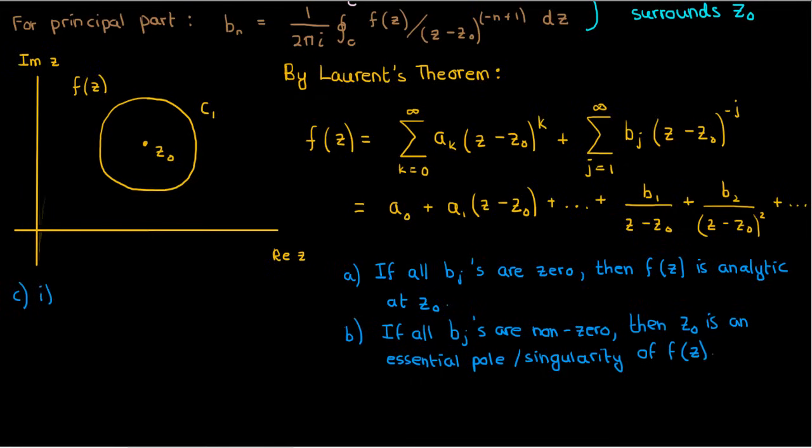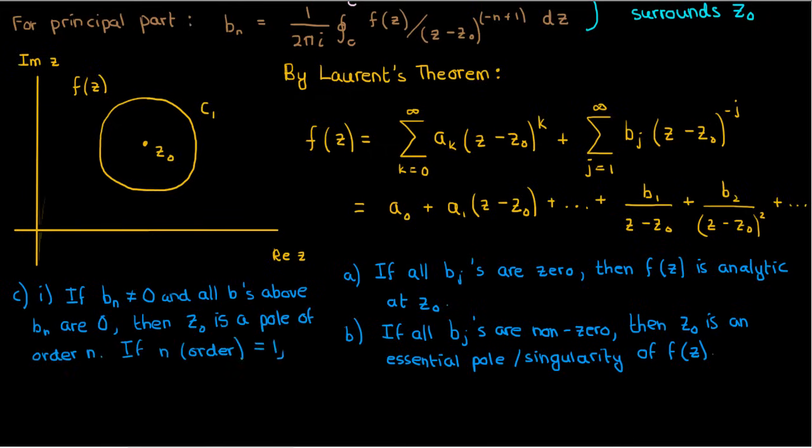On the other hand, if only the first n b series coefficients are non-zero, while all the b series coefficients above the index n are 0, then z0 is said to be a pole of order n. A pole of order 1 has a special name. It's called a simple pole.